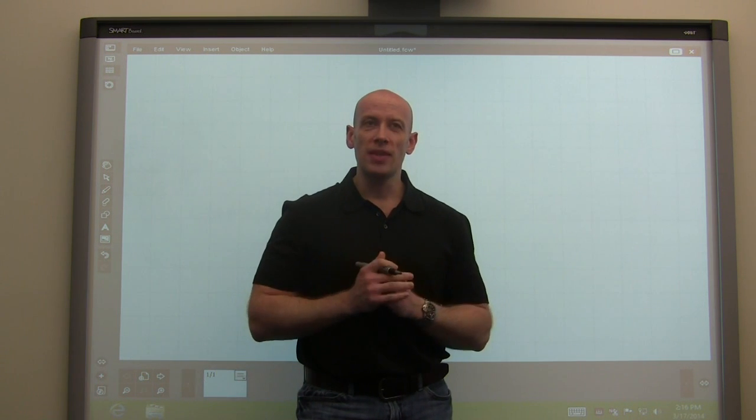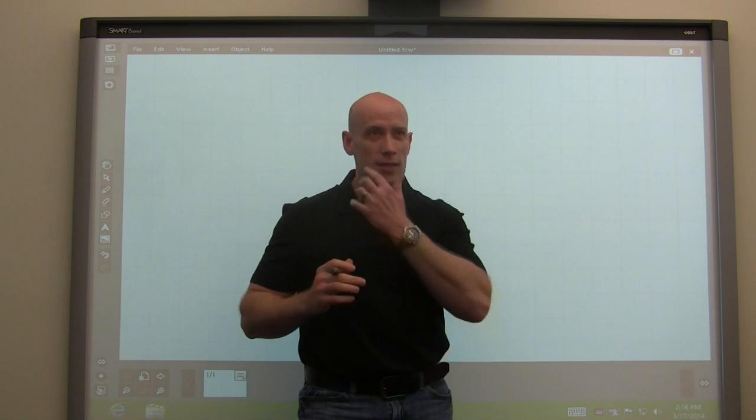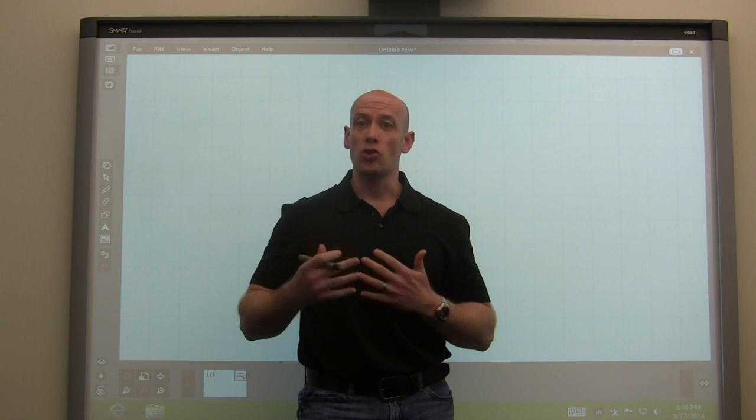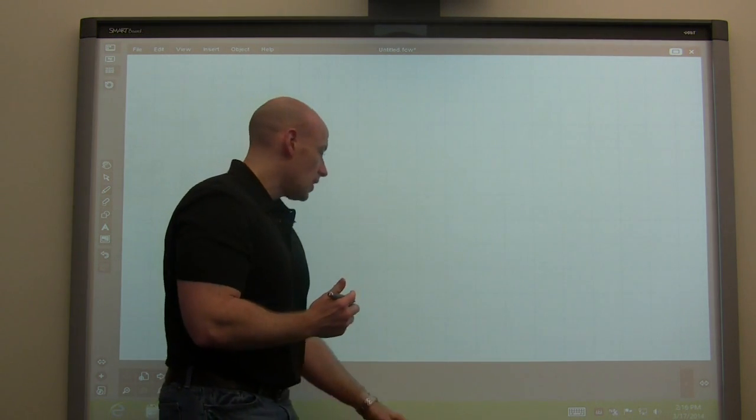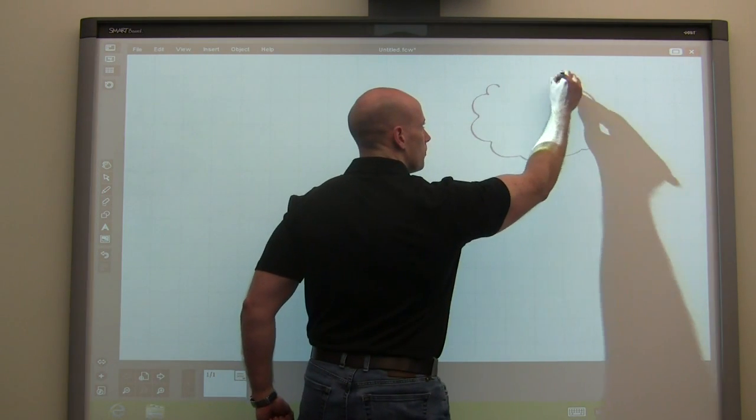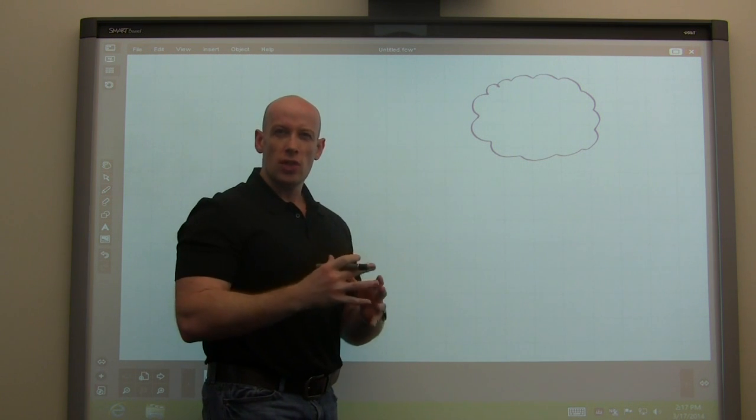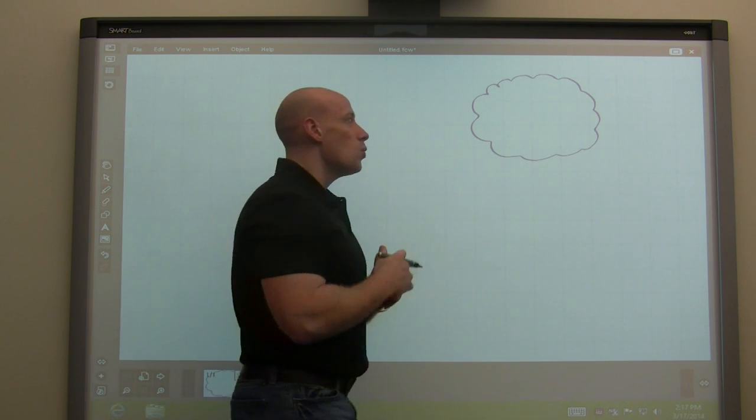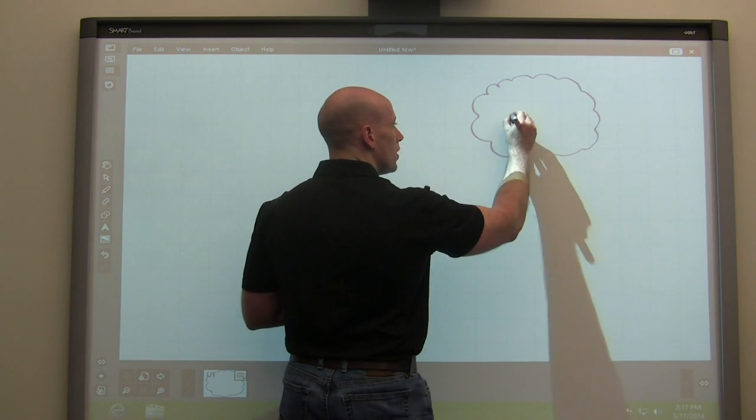Now traditionally when we think about networking and connectivity from Windows Azure to our on-premise, we think about the site-to-site virtual private network. And this really looks like the following. So we have our Windows Azure subscription. In here we create an affinity group which is linked to a certain region in Windows Azure. Within that affinity group we create a virtual network.